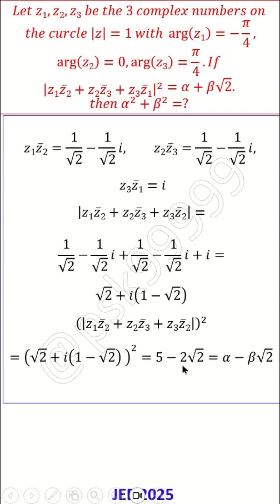Which is nothing but 5 minus 2 root 2, which is alpha minus beta root 2, right? That's what is given. So alpha is 5, beta is 2. So alpha square plus beta square equal to 29. That's the answer.